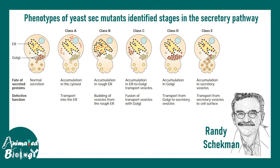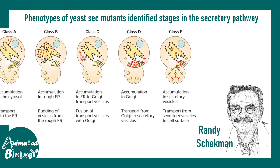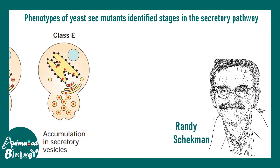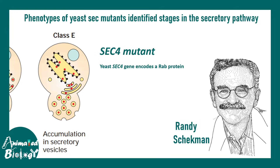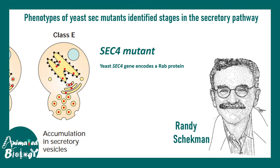One key idea came from a yeast screen done by Randy Schekman's group — this was Nobel Prize-winning work. Several secretory-deficient mutants were discovered in yeast. The class E type mutant showed accumulation of proteins in secretory vesicles, meaning those vesicles could not fuse to the membrane and could not release their protein content. In this class, the sec4 mutant was discovered, which corresponds to the RAB protein in yeast — demonstrating that RAB proteins and SNAPs are really important for vesicle fusion.